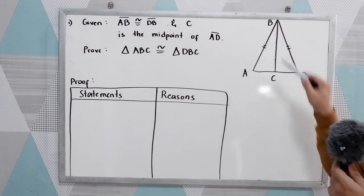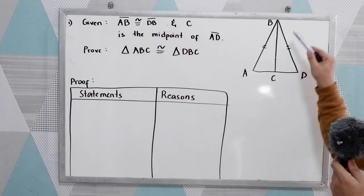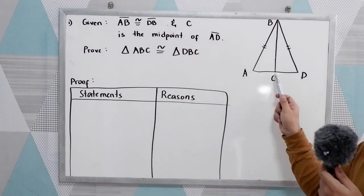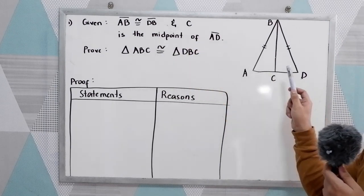AB is congruent to DB, and C is the midpoint of AD.